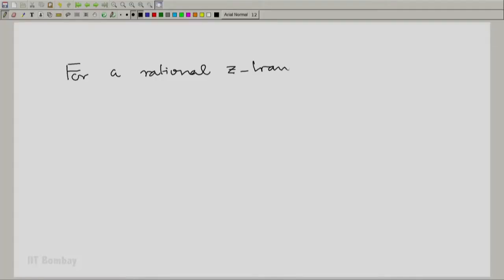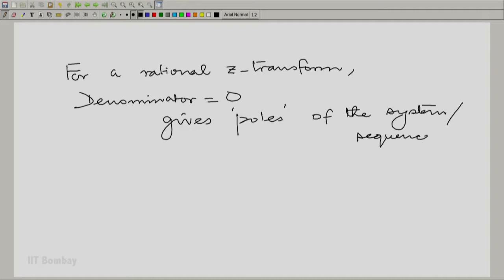Now, you see what is the role of the factors in the denominator and the factors in the numerator. We want to give them names and we will choose to give them the same names. For a rational Z-transform, denominator equal to zero gives what are called the poles. Similarly, for the numerator equal to zero, we get the zeros. So, the words poles and zeros have the same connotation.